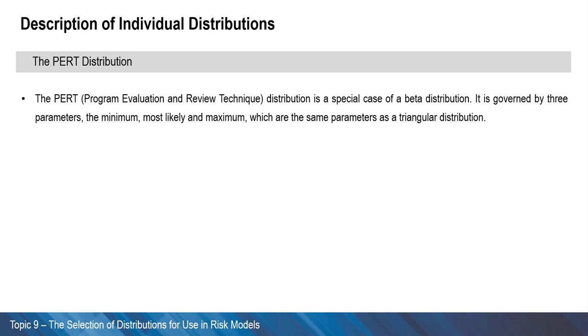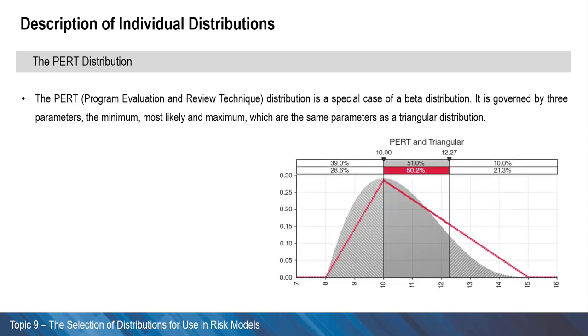The main use of the PERT is as a pragmatic alternative to the triangular and beta distributions. It generally can be considered to create a more accurate representation of processes than a triangular distribution.